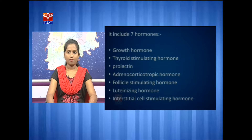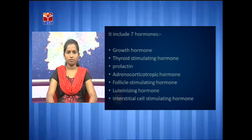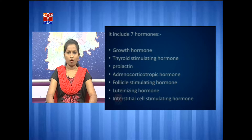Here are the hormones secreted by the anterior lobe: growth hormone, thyroid stimulating hormone, prolactin, adrenocorticotropic hormone, follicle stimulating hormone, luteinizing hormone, and interstitial cell stimulating hormone.